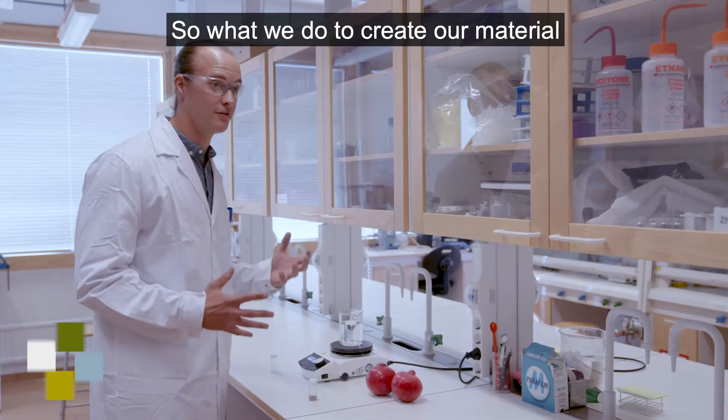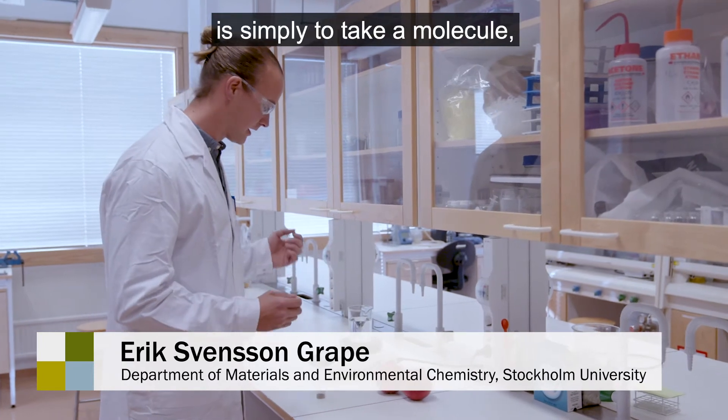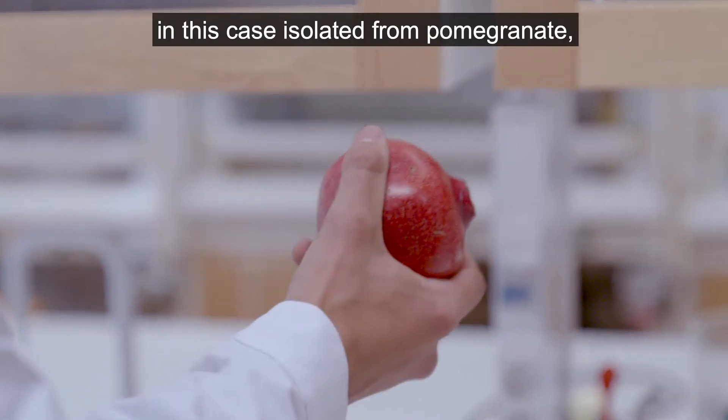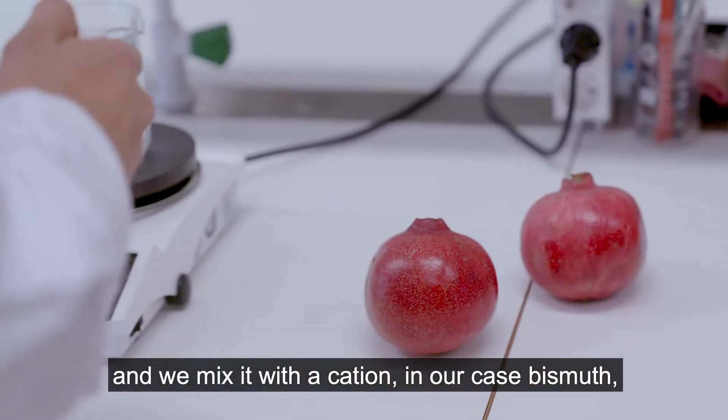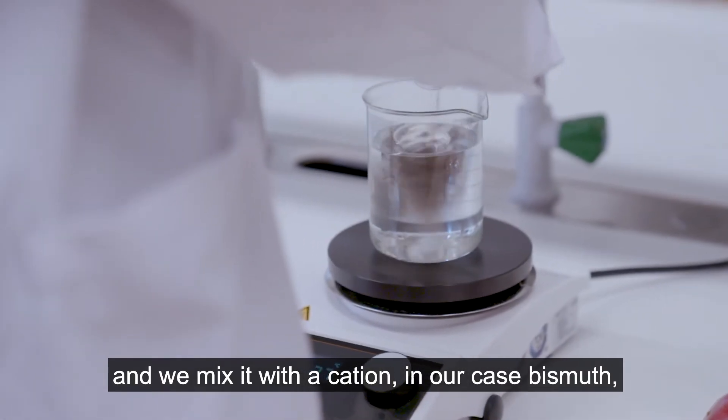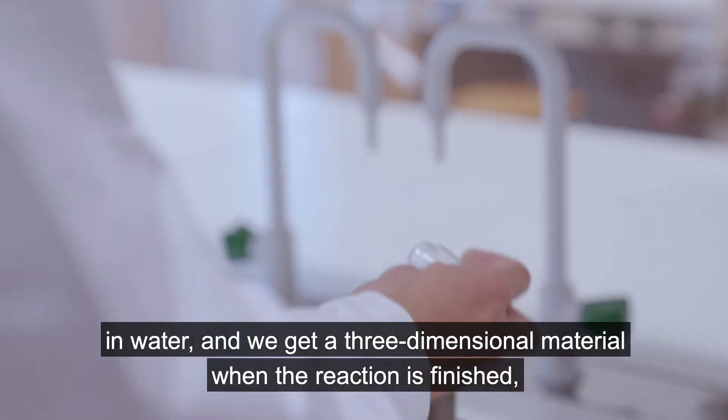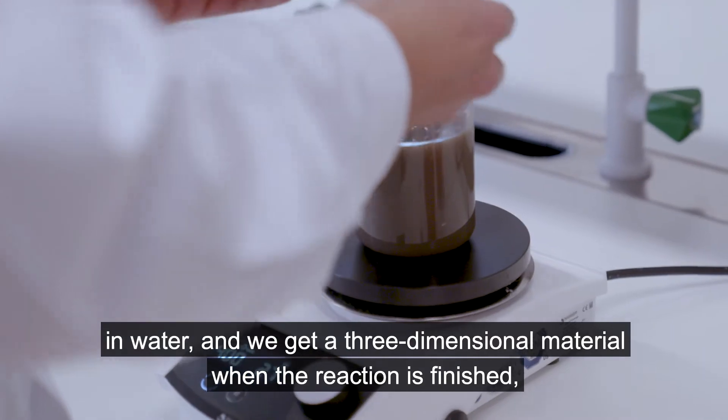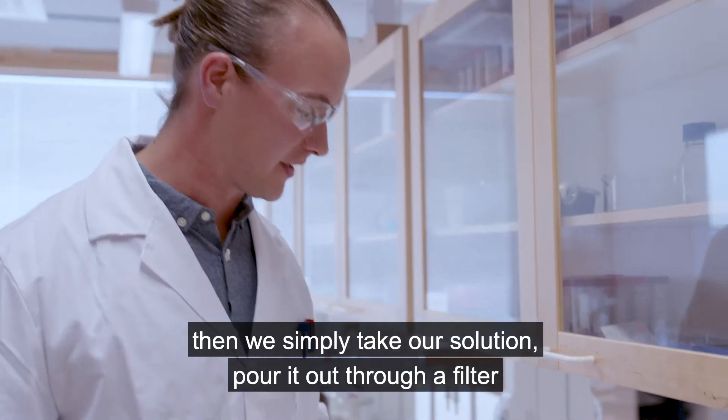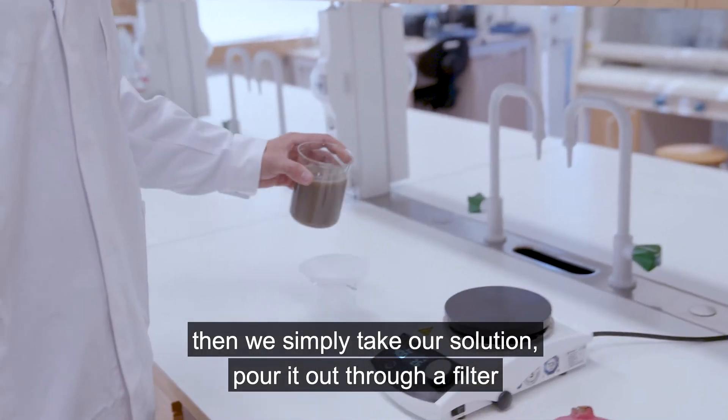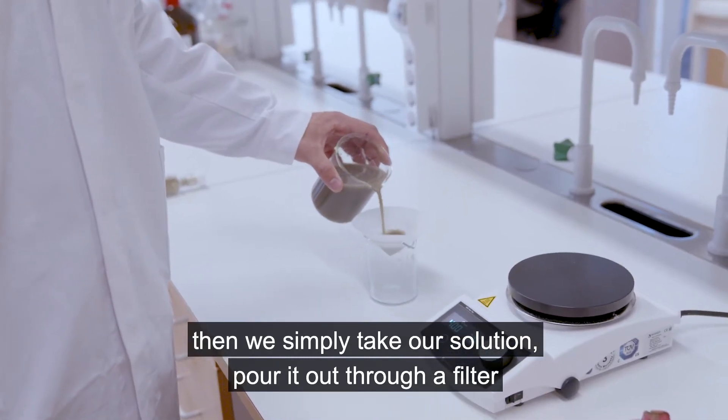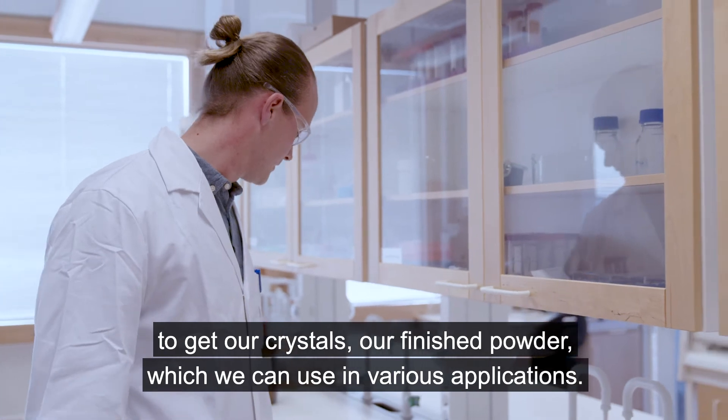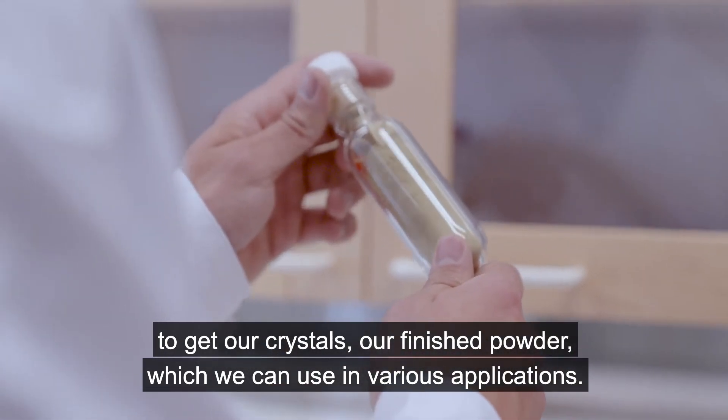So what we do to create our materials is to take a molecule, in this case isolated from pomegranate, and we blend it together with a cation, which is bismuth in our case, in water. And then we will get a three-dimensional material. When the reaction is finished, we take our solution, we'll have it and let it filter. And then we have made our crystals that we can use for various applications.